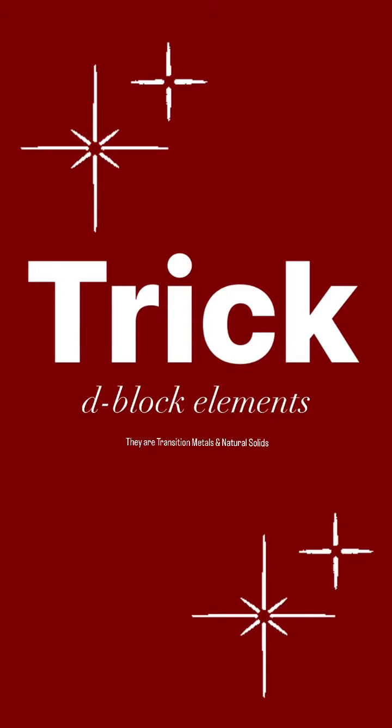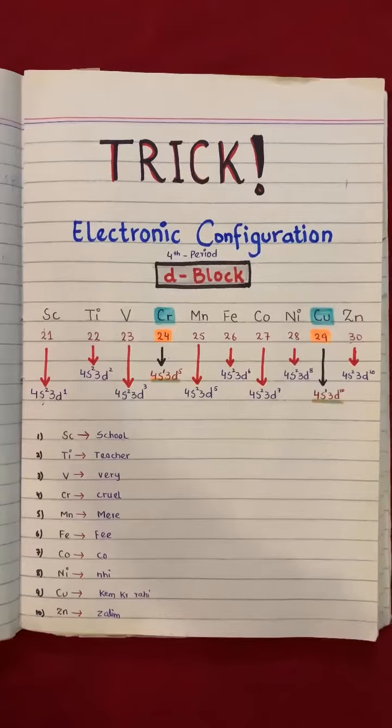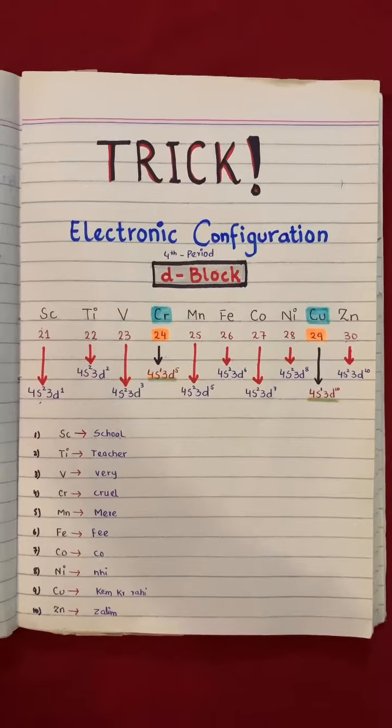Assalamu alaikum students. So today I'm sharing an excellent trick to remember the electronic configuration of d-block elements present in the fourth period. As we know, there are 10 elements present in each row of d-block elements.